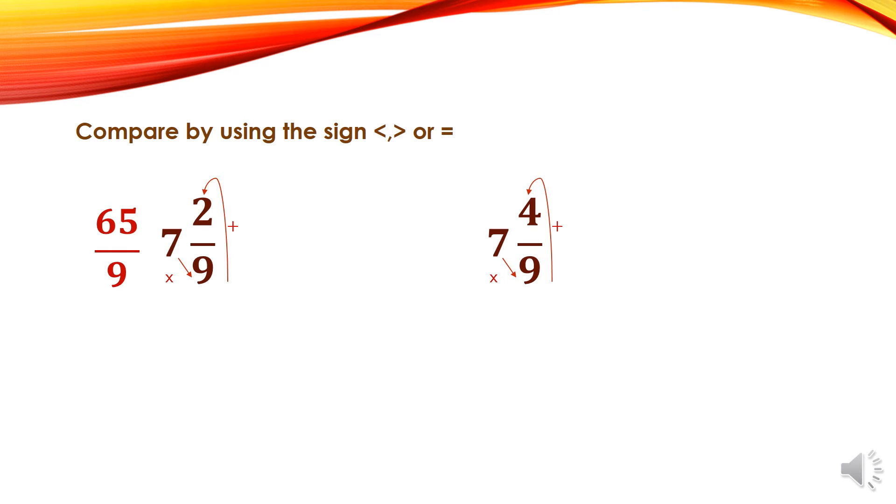The second one: 7 times 9 plus 4 equals 67 over 9. Now I get 2 fractions with the same denominator. I will compare the numerators, 65 and 67. Of course, 67 over 9 is greater than 65 over 9, or 65 over 9 is less than 67 over 9.